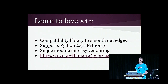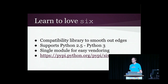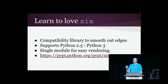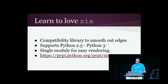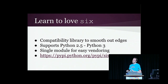One thing you should learn to do is love Six — the library by Benjamin Peterson, one of the core developers. Two times three equals six, get it? It's a compatibility library that works from Python 2.5 forward and provides helpers for things that work in both 2 and 3. It is a single module, so it's easy to vendor if you have issues pulling dependencies from pip. It has a very liberal license and is obviously on PyPI.